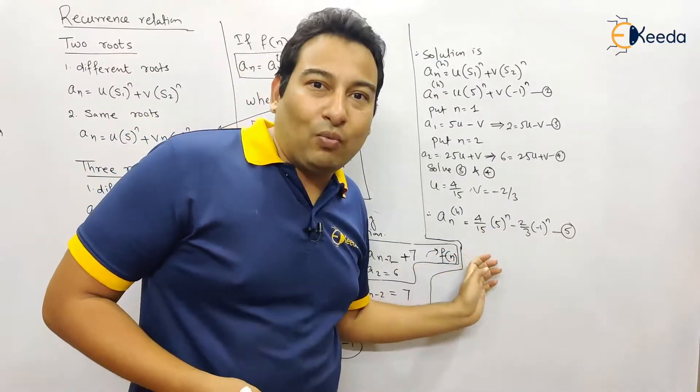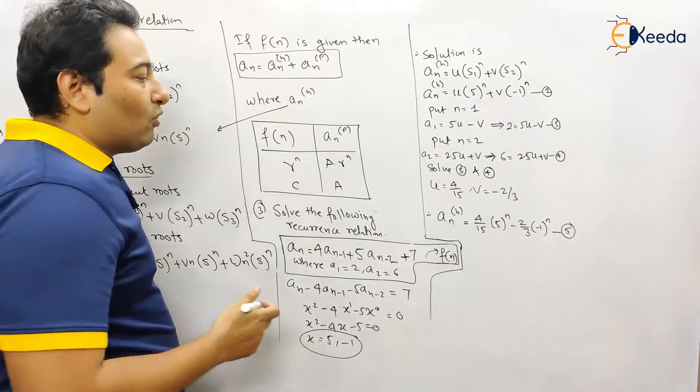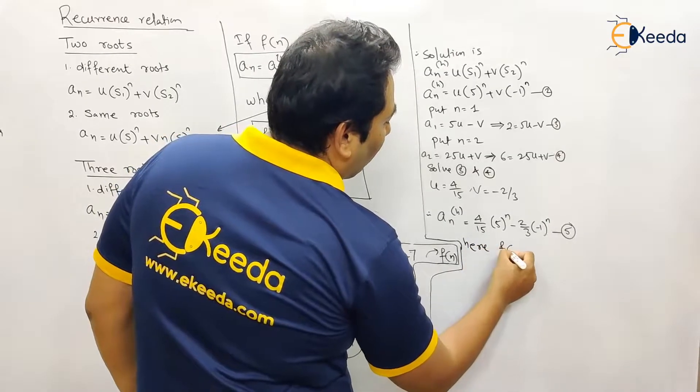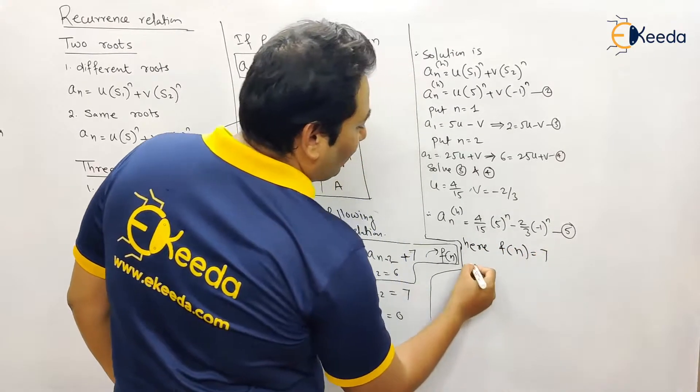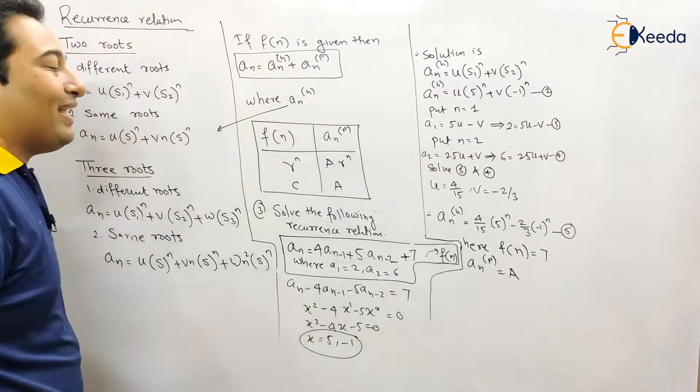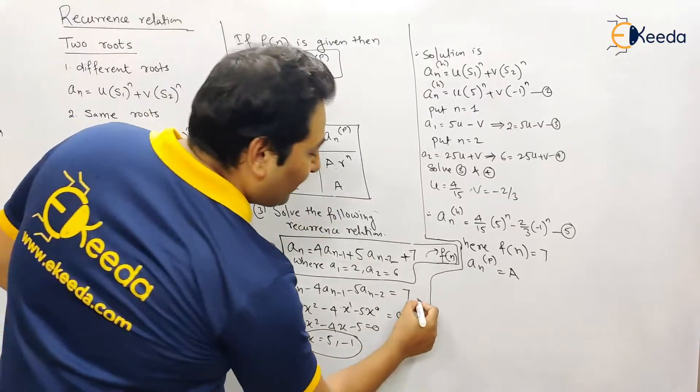So this was actually your problem number one. Here there is an addition, A_np will also come. Here f(n) is 7, so what is your A_np? It's a constant, therefore A_np will be a.